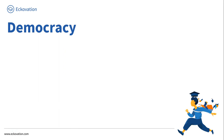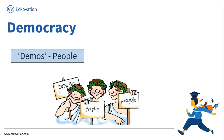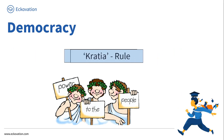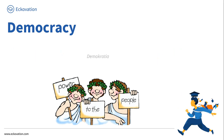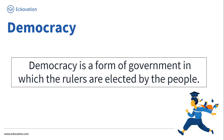The word democracy comes from a Greek word which we call 'democratia.' In Greek, 'demos' means people and 'kratia' means rule. From democratia we get the word democracy. We can say that democracy is a form of government in which the rulers are elected by the people.